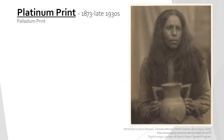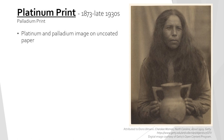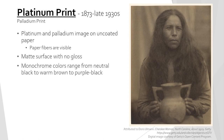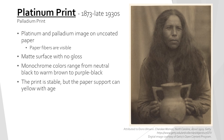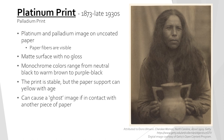Platinum prints were used from 1873 to the late 1930s. These prints consist of a platinum and palladium image on uncoated paper. The paper fibers will be clearly visible and the paper will have a matte surface with no gloss. The image is monochrome in black, ranging from neutral black to warm brown to purple black. The image itself is very stable, but it is common for the paper support to yellow with age. Platinum prints are also known to cause ghost images if they have been stored in contact with another sheet of paper.